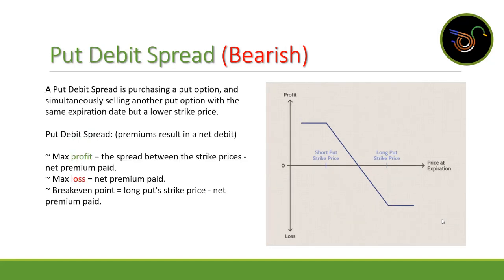Moving on to the put debit spread, which is also a bearish strategy. It's when we purchase a put option and sell another put option with the same expiration date but a lower strike price. Like the call debit spread, this results in a net debit when we open the trade. Max profit is the spread between the strike prices minus the net premium paid. Max loss is the initial premium paid. Breakeven is the long put strike price minus the net premium paid.